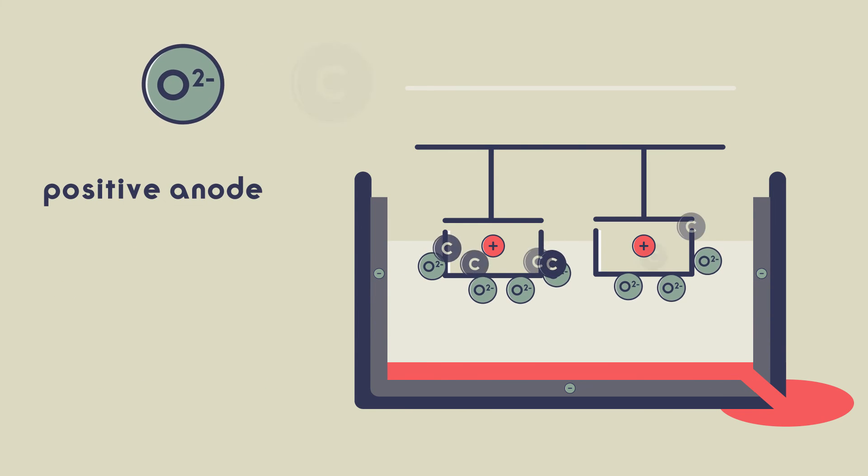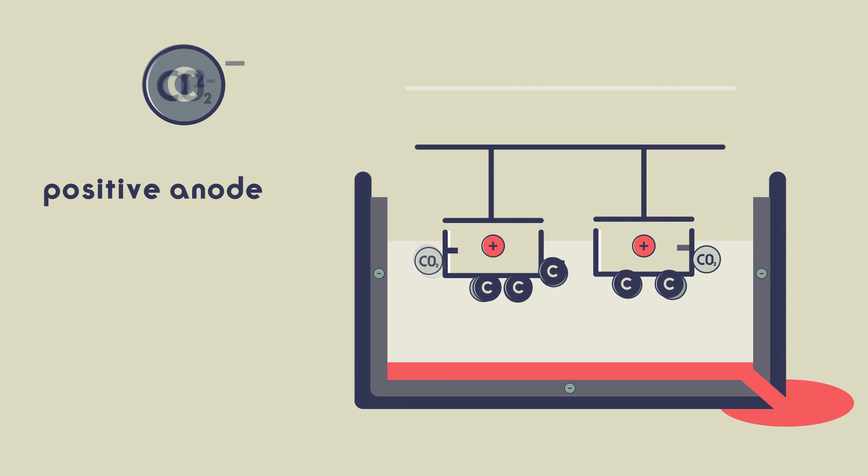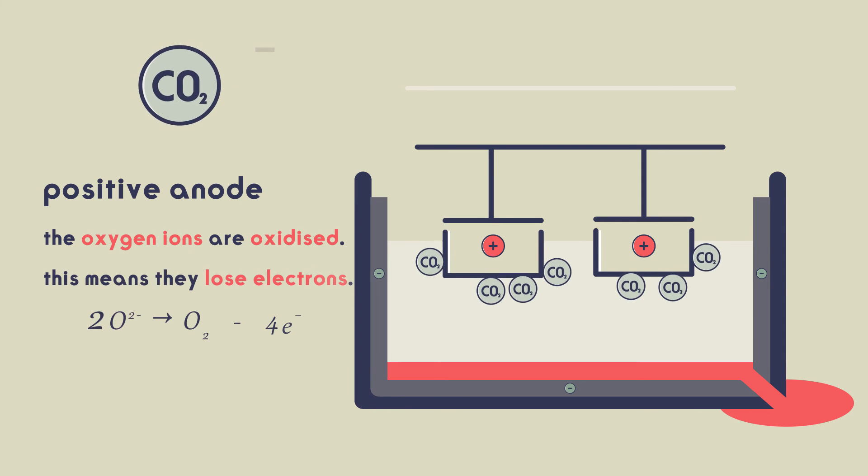At the positive anode, where the oxygen reacts with carbon to make carbon dioxide, the oxygen ions are oxidised. This means they lose electrons.